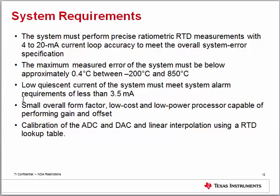The system must perform precise ratiometric RTD measurements with 4-20mA current loop accuracy. The maximum measured error must be below approximately 0.4°C across the full range of -200°C to 850°C. The low quiescent current must meet system alarm requirements of less than 3.5mA. The design should also be small form factor, low cost, using a low-power processor capable of performing gain and offset calibration, ADC/DAC calibration, and linear interpolation using an RTD lookup table.